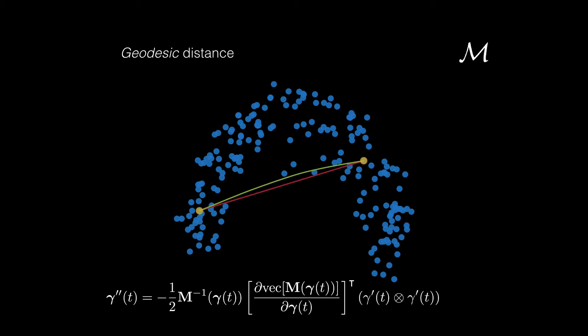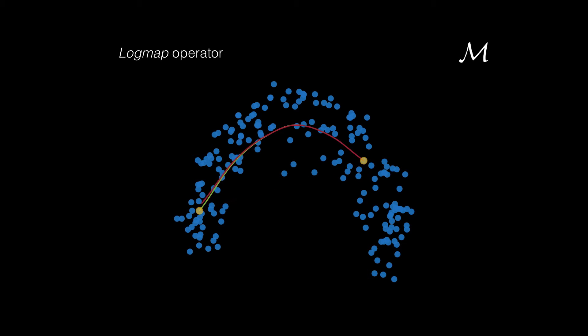Then by solving a system of second-order differential equations we get the geodesic distance, which is the curve with minimal length that connects two points. Also the logmap operator is defined, which maps a point on the tangent space of another point. The inverse operator is known as the exponential map.